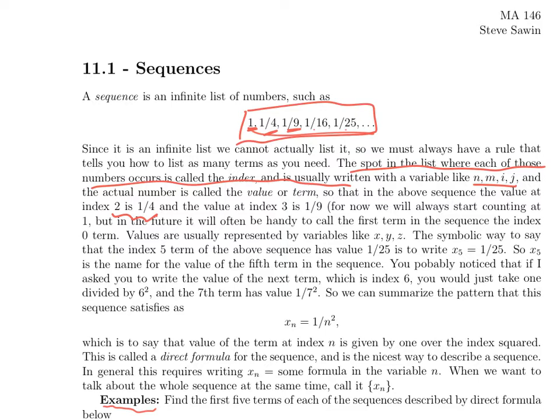Values are usually represented by variables late in the alphabet, like x, y, z. If I want to talk about the value of the fifth term, the index five term, I would call it x sub 5. So x tells you it's the value, sub 5 tells you the value at index 5. In this sequence, x sub 5, the fifth term in the sequence is 1/25.